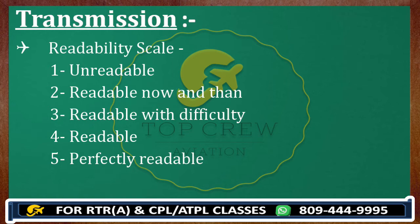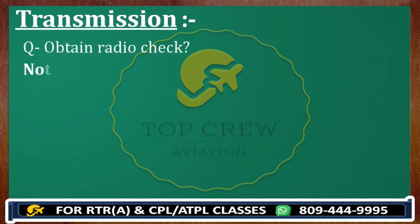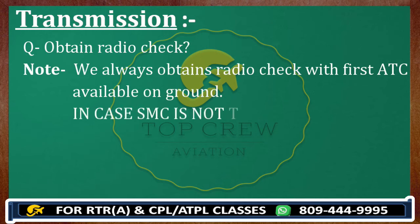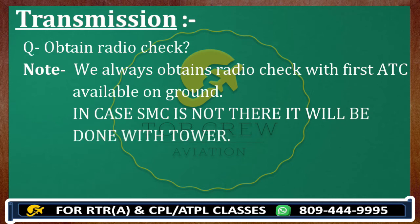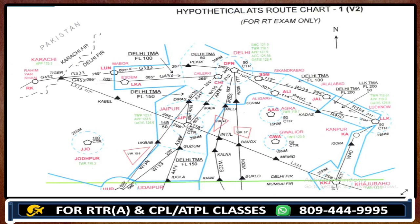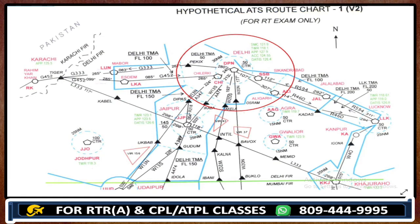In your exam, the question would be to obtain a radio check. We always obtain a radio check with the first ATC available on ground. In case surface movement control is not there, it will be done with tower. If you check chart number one over Delhi Papa November, we do have ATC available on ground. For those not aware of how to find ATC in charts, please click the link in the i-button and learn about ATCs, then come back.